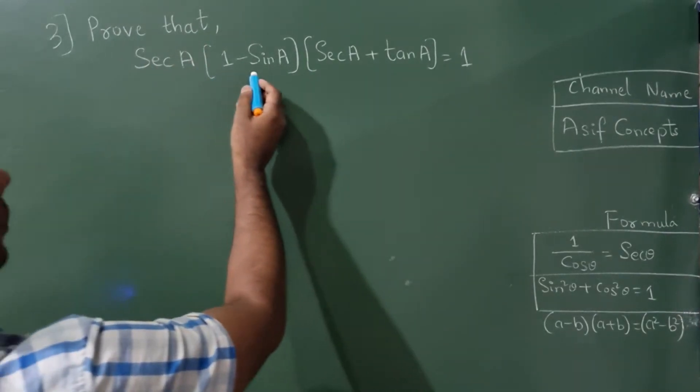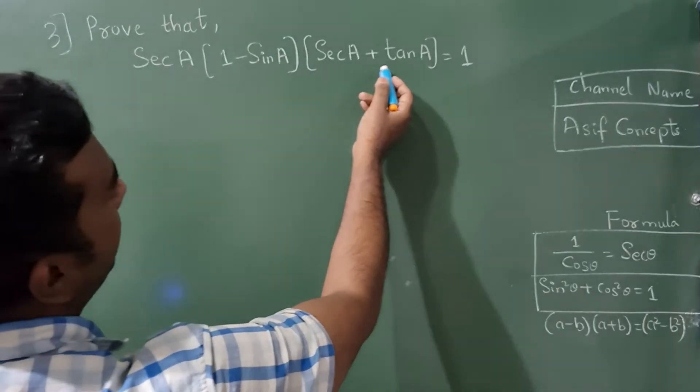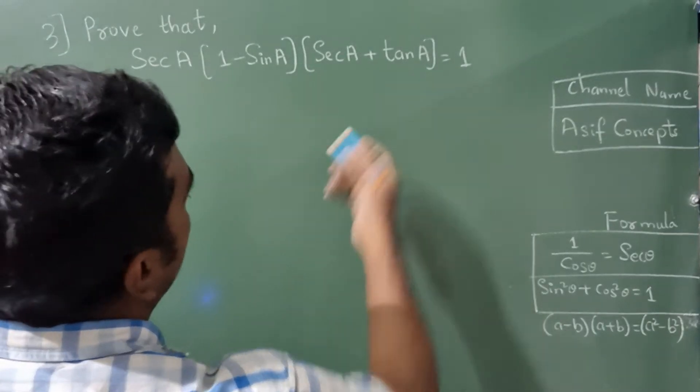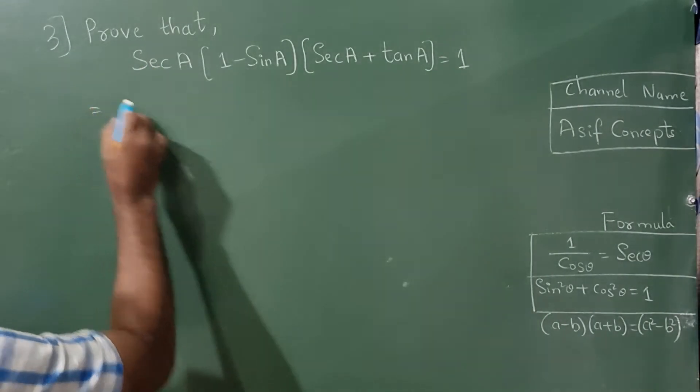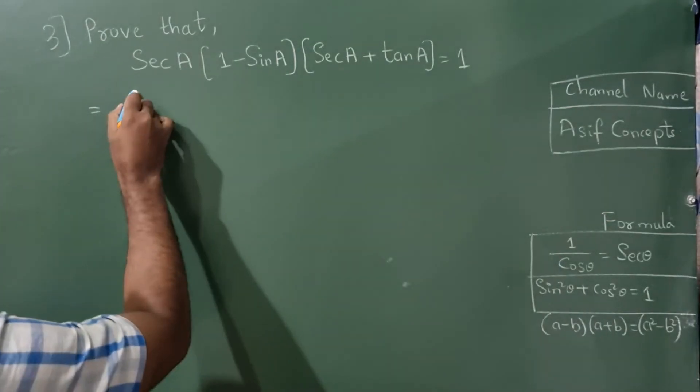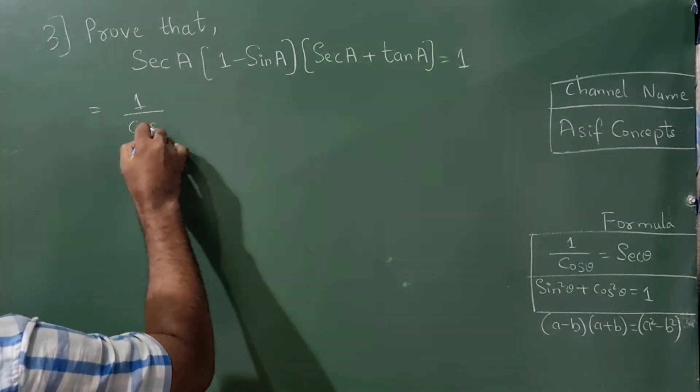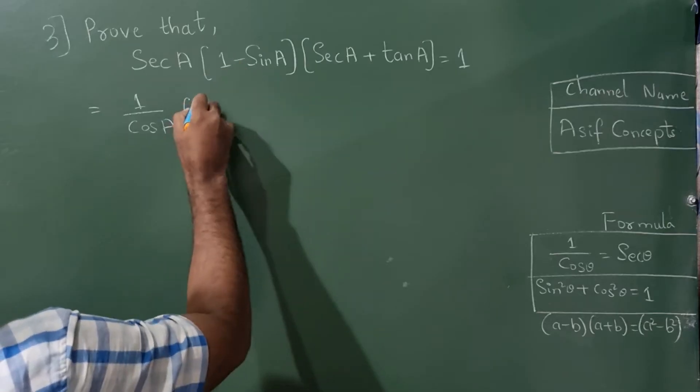Prove that sec A × (1 - sin A) × (sec A + tan A) = 1. From this formula, I can write it as 1 divided by cos A. Now write this as it is.